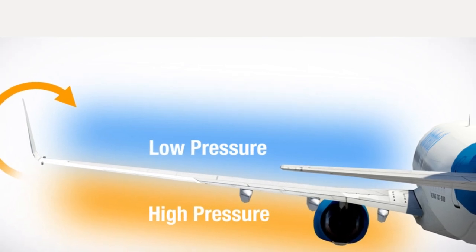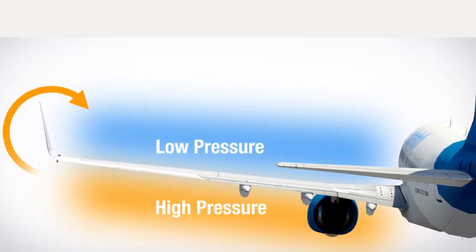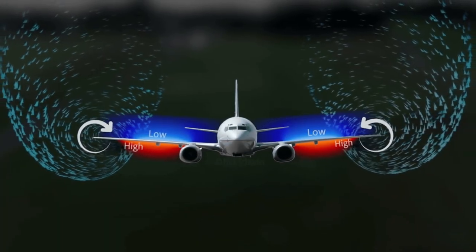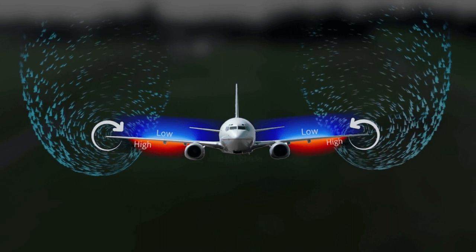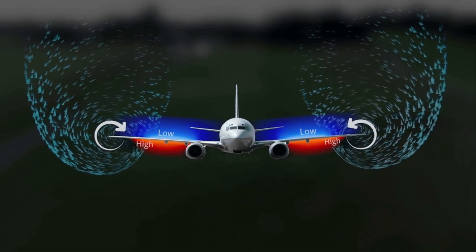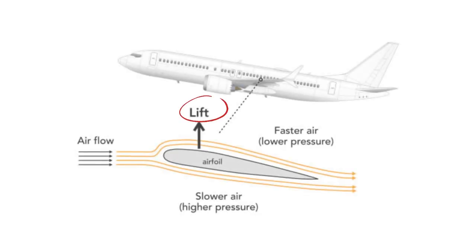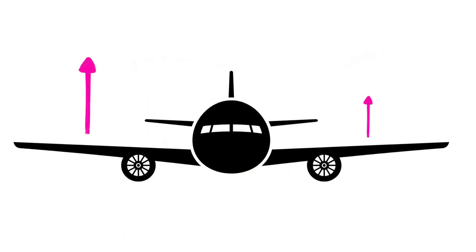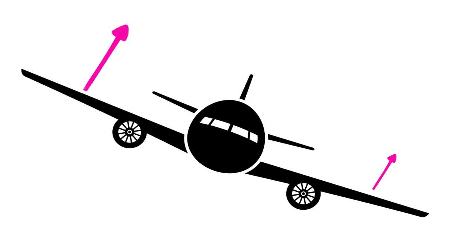Due to higher pressure below and lower pressure above, air starts flowing from the bottom of the wing to the top near the wingtips, resulting in the formation of two counter-rotating vortices trailing behind the aircraft — causing disturbed airflow and generating wake turbulence for aeroplanes following behind. An aeroplane following will encounter two hazardous situations: first, the disturbed airflow may not produce the required lift, causing loss of height; and second, unequal lift forces on both wings will result in an uncommanded rolling motion. So double trouble.